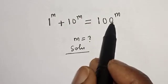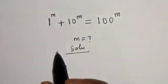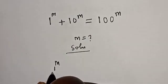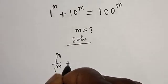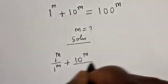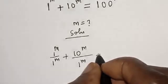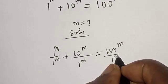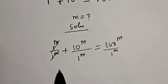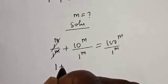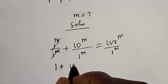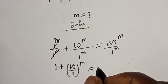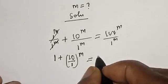Solution: we have the equation 1 raised to power m plus 10 raised to power m is equal to 100 raised to power m. Let's divide both sides by 1 raised to power m. We have 1 raised to power m divided by 1 raised to power m, plus 10 raised to power m divided by 1 raised to power m, is equal to 100 raised to power m divided by 1 raised to power m. This one will cancel with this, giving us 1 plus (10 over 1) raised to power m is equal to (100 over 1) raised to power m.